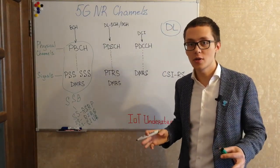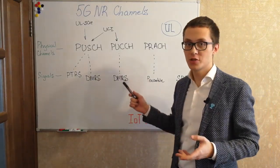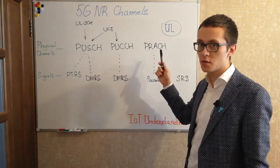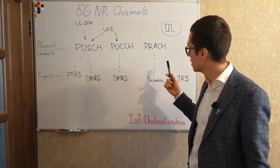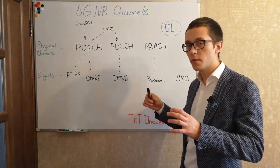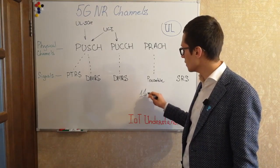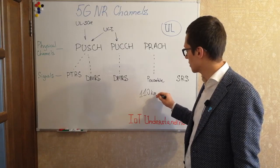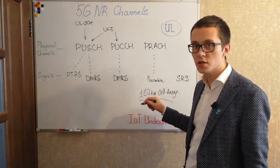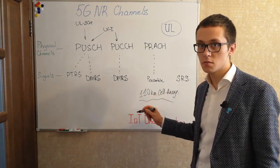Now let's take a look at the uplink direction. In uplink we have pretty much the same picture as in LTE: uplink shared channel, uplink control channel, and random access channel for the initial transmission of user equipment, which carries the preamble. By the way, in 5G the preamble format number one supports a cell range up to 110 kilometers, so we may configure a very long distance cell range for some cases.